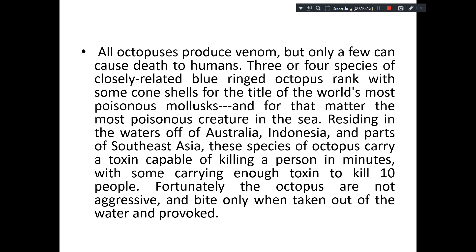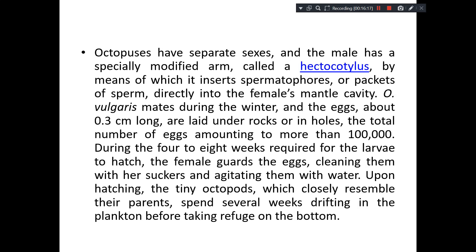Even if you touch them, nothing happens otherwise. These octopus have separate sexes, and the male has a specially modified arm called the hectocotylus, also called an intermittent organ, by means of which it can directly insert sperm or packets of sperm into the female mantle cavity.